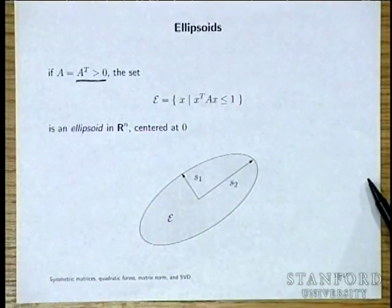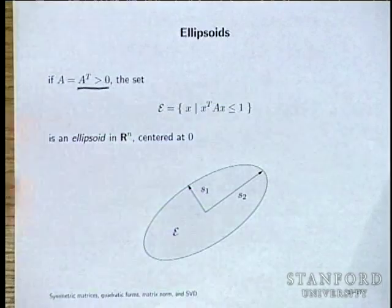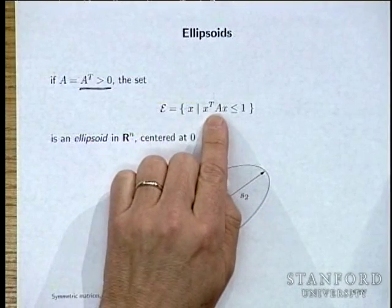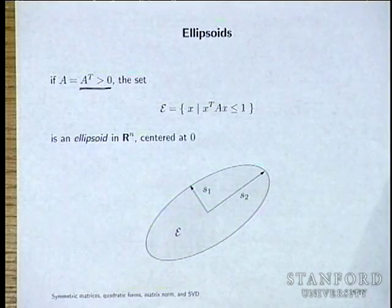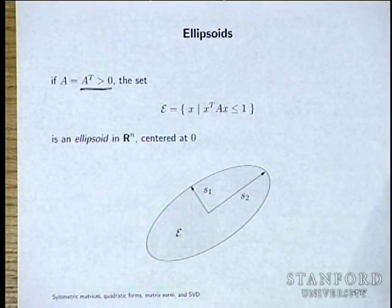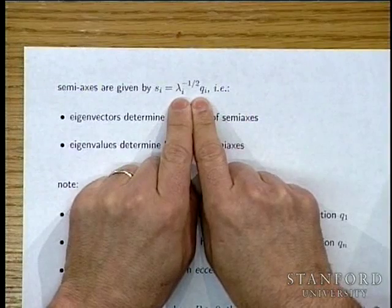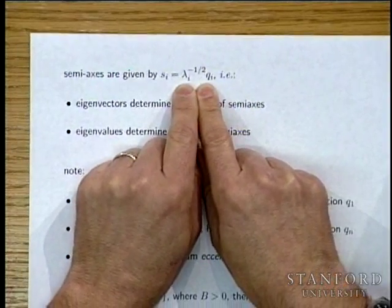An ellipsoid is a sub-level set of a positive definite quadratic form. The semi-axes are given by the eigenvectors of A, and their lengths are one over the square root of the eigenvalues lambda_i. If you go in direction Q_1, X transpose AX is as large as possible per unit length, so the ellipsoid is thin in that direction — large eigenvalues correspond to thin semi-axes.